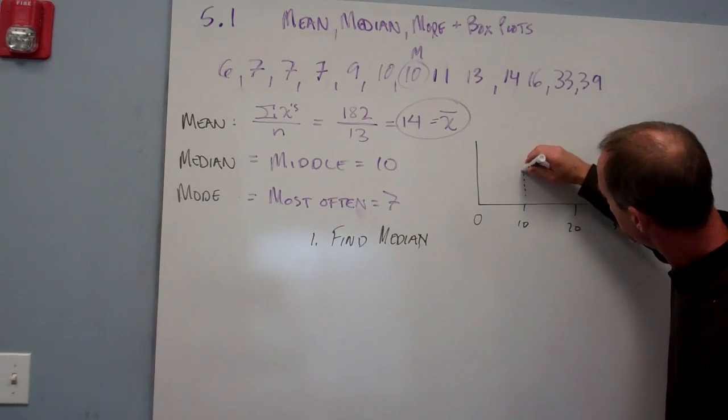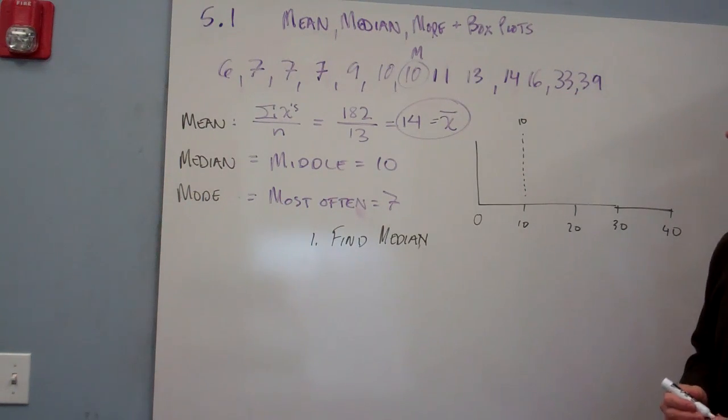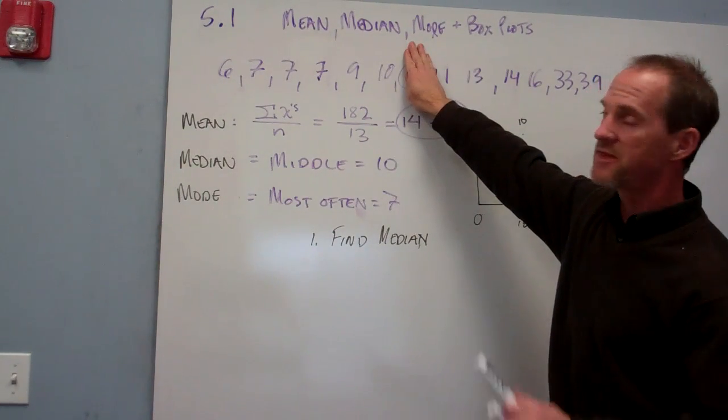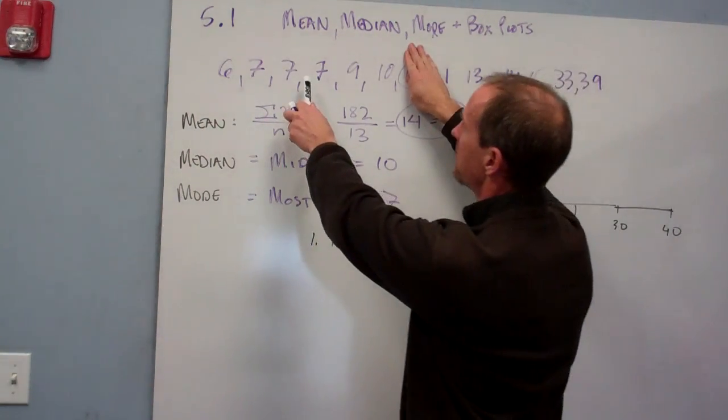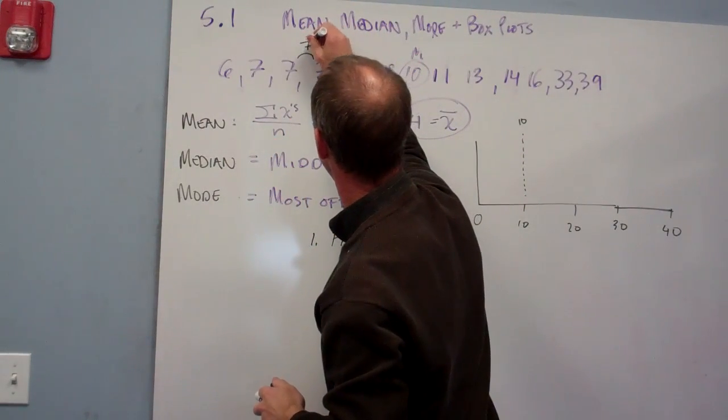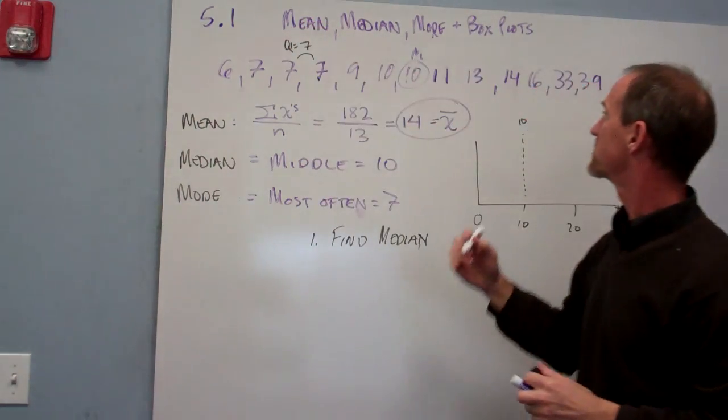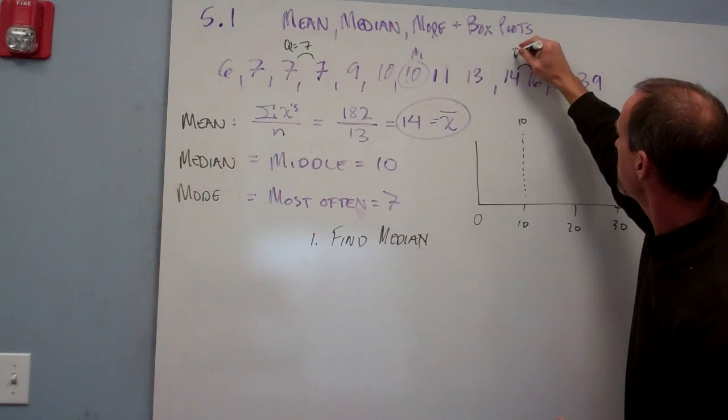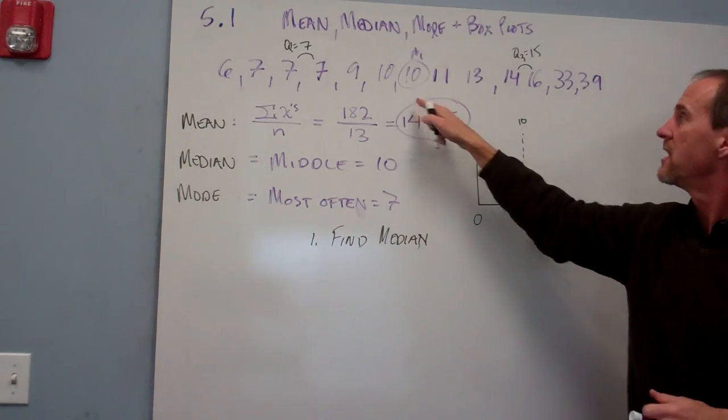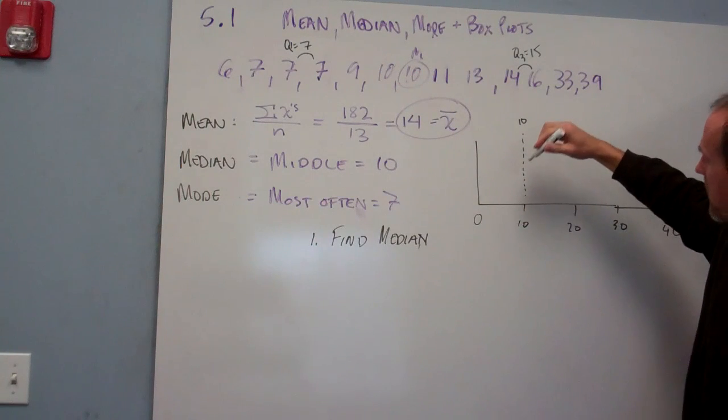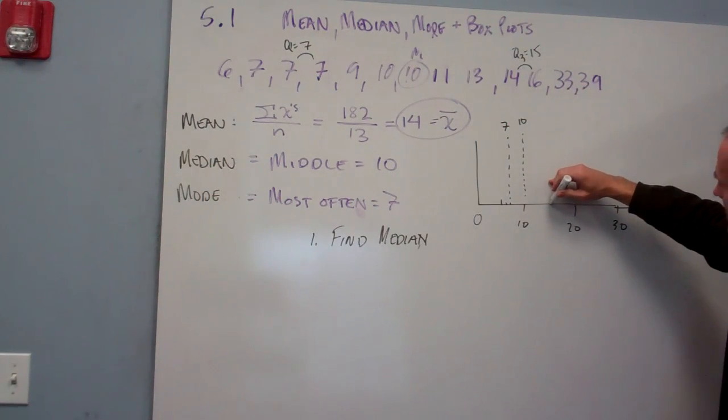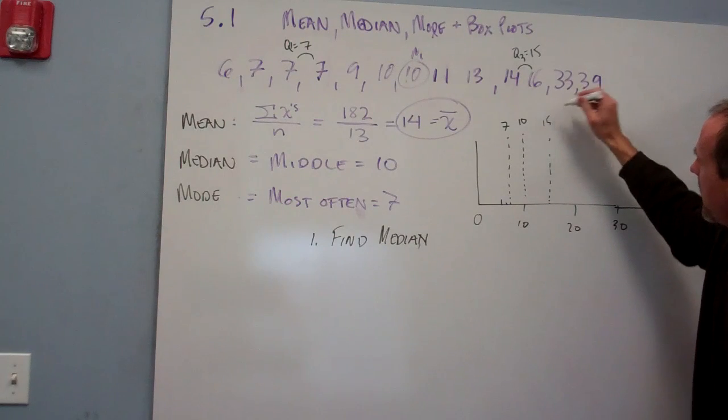I'm going to find the upper and lower quartile. To do that, I ignore that middle value and find the median of the lower half and the median of the upper half. The median of the lower half, counting in three from each end, I split the difference, and it's seven right there. That's Q1, Q1 equals 7. If I do the same thing here, Q3 equals 15. I'm splitting the difference there, and this is Q2, but that's my median. My upper and lower quartiles I'm going to graph those. There's 5, 6, 7 is right there, and then 15 is right here. I'm now able to draw the box part of my box-and-whisker plot.